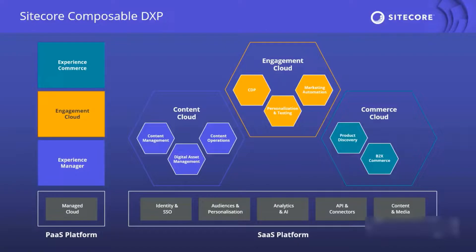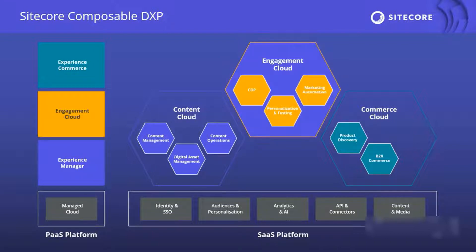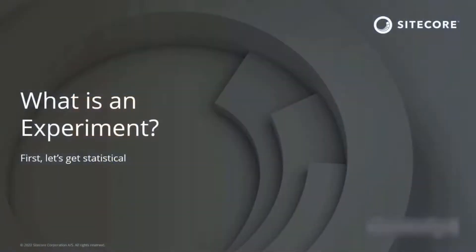As a quick reminder, Sitecore has three main pillars: the Engagement pillar, the Content pillar, and the Commerce pillar. Sitecore CDP and Personalized live within the Engagement pillar. These products are composable, so they can live together or work well with your current technologies.